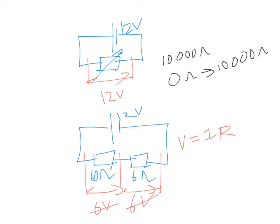So how do we derive the formula? How do we calculate the PD across each resistor easily? There's a shortcut, and you must know how to derive it first. I'll show you how to derive it. So let's start and draw this cell here.